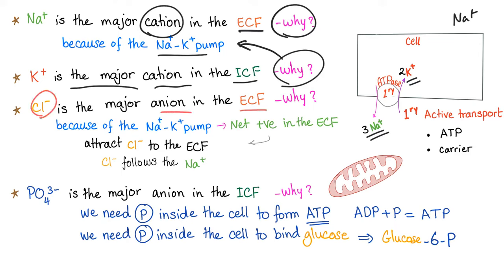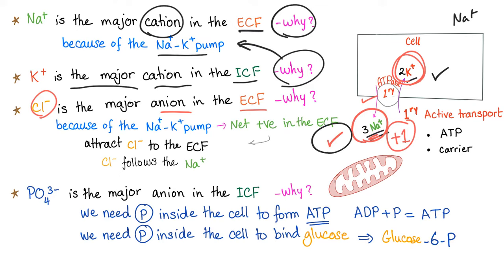Chloride is the major anion in the extracellular fluid. Why? Because the sodium-potassium pump pumps three sodium out and two potassium in — net one positive ion outside — creating more electropositivity outside and more electronegativity inside. This attracts the negative chloride from inside to outside. That's why chloride follows sodium — sodium and chloride are like a husband and wife.